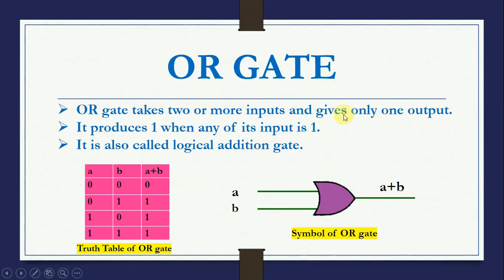OR gate takes 2 or more inputs and gives only 1 output. It produces 1 when any of its inputs is 1, and it is also called a logical addition gate.